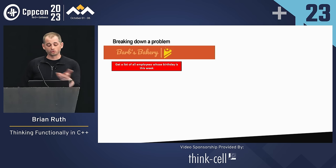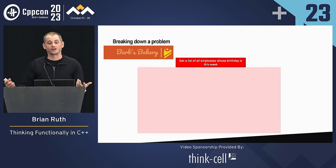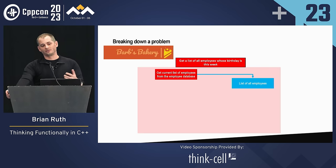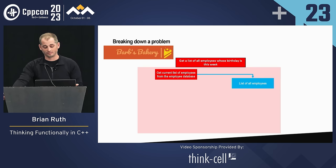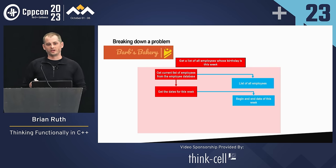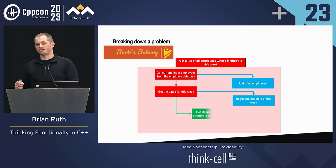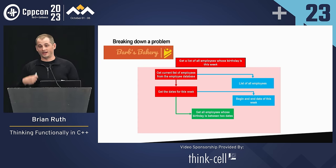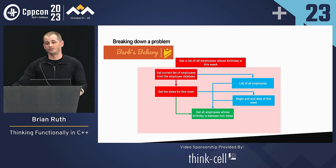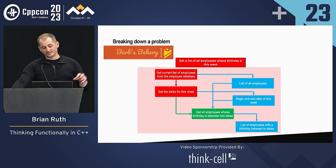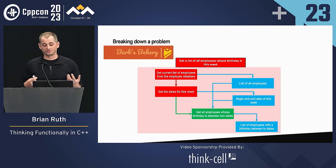This is a high overview of the problem. Let's zoom in on one small portion. Getting a current list of employees is an action, which generates data — the list of all employees at that current time. Next, we need to get the dates for the current week, which generates the beginning and end dates of the week — another set of data. Now we want to determine which employees have a birthday within those two dates: given a list of employees with birthdays and a beginning and end day, give me the list of employees with birthdays between those dates — that's a calculation.